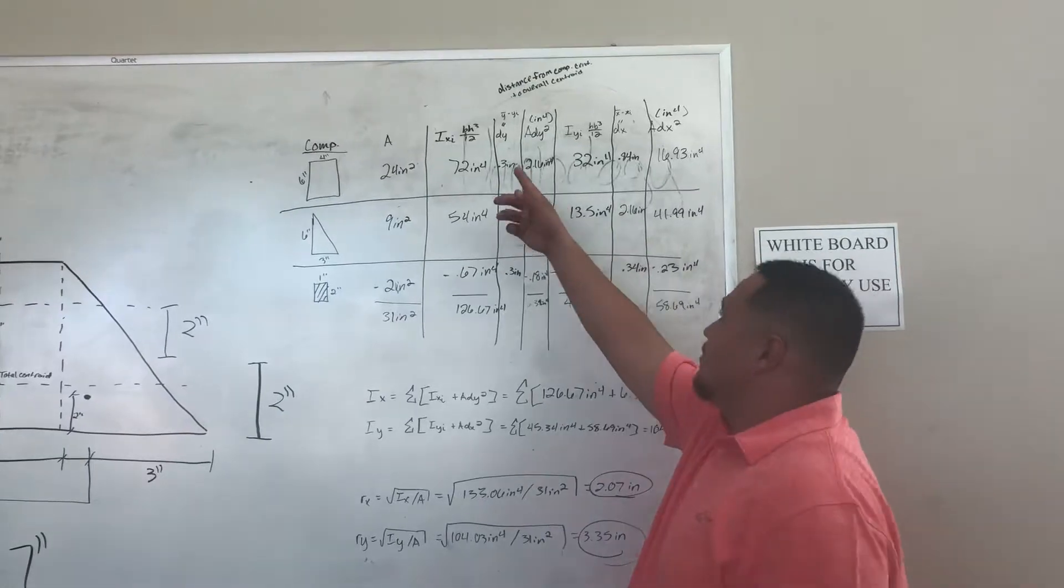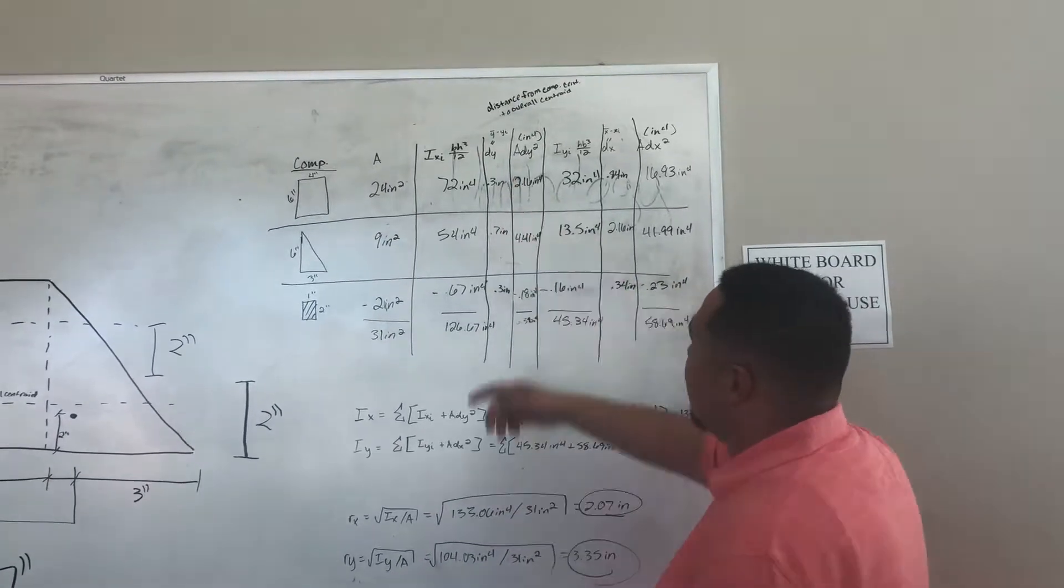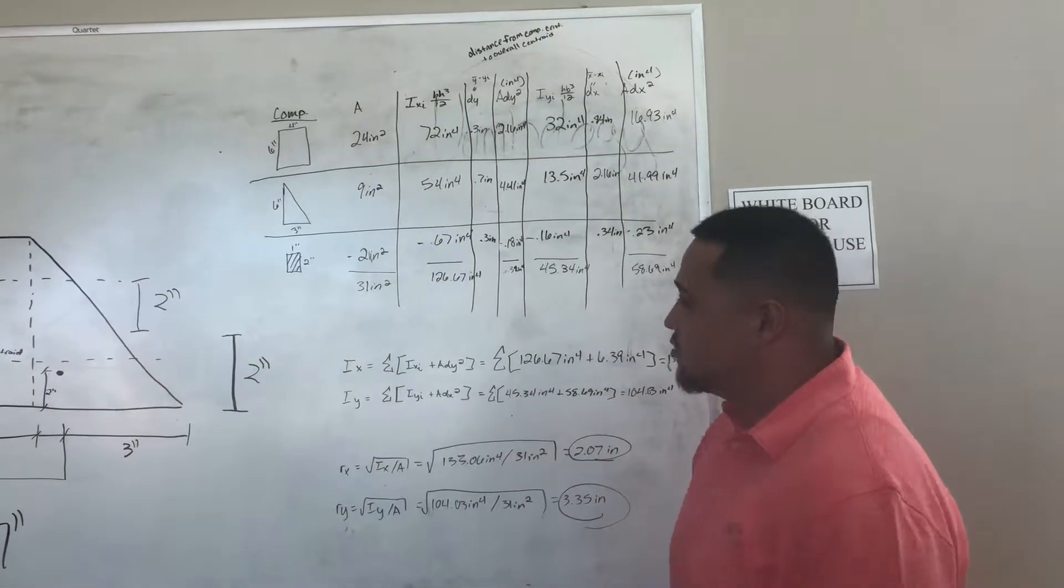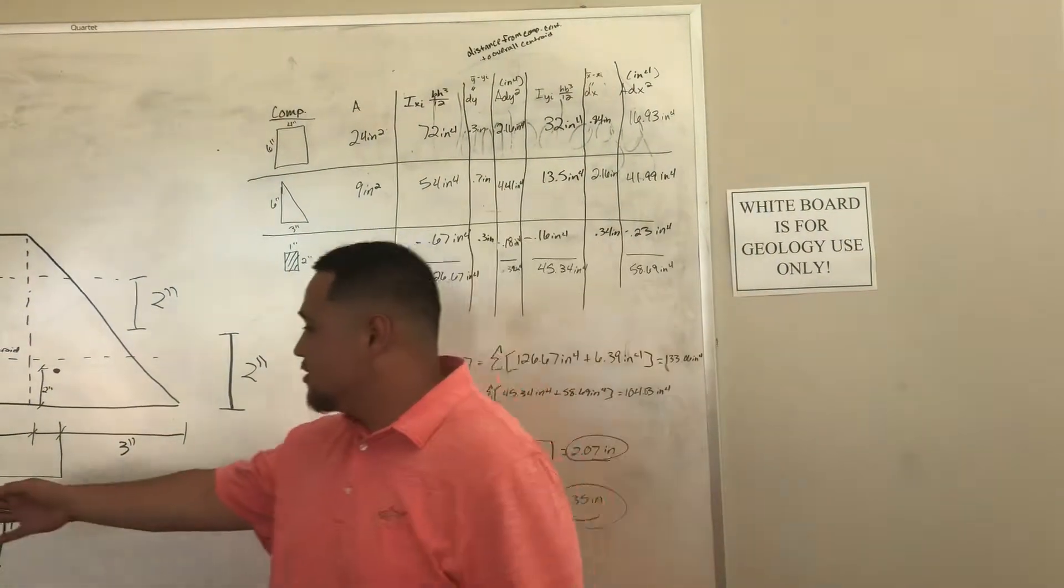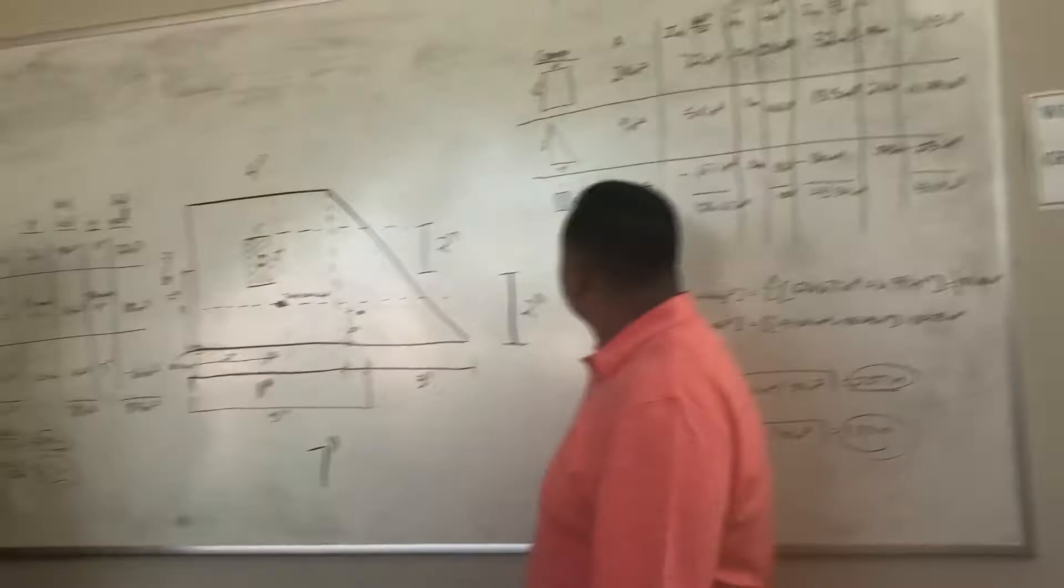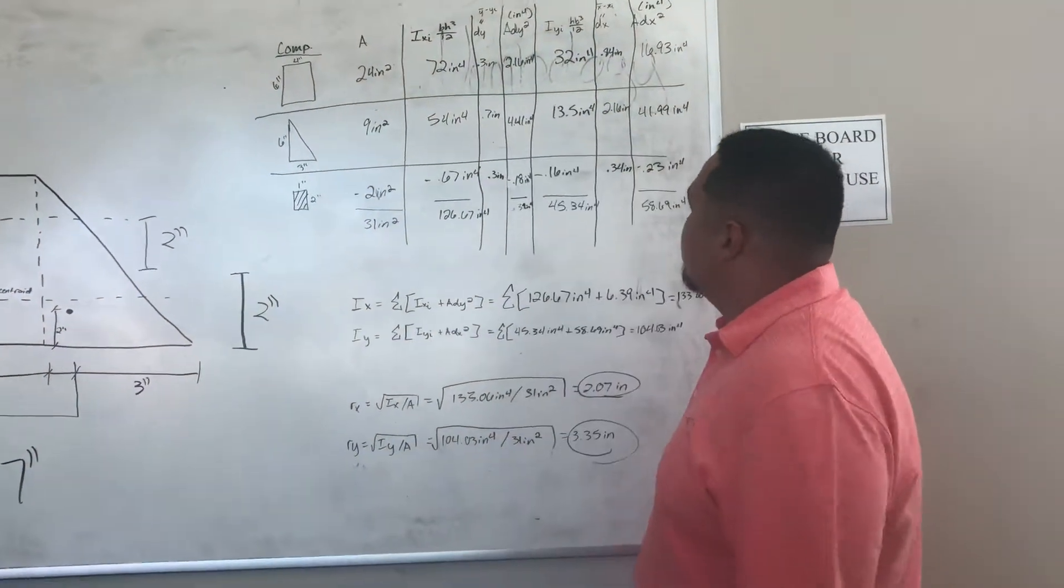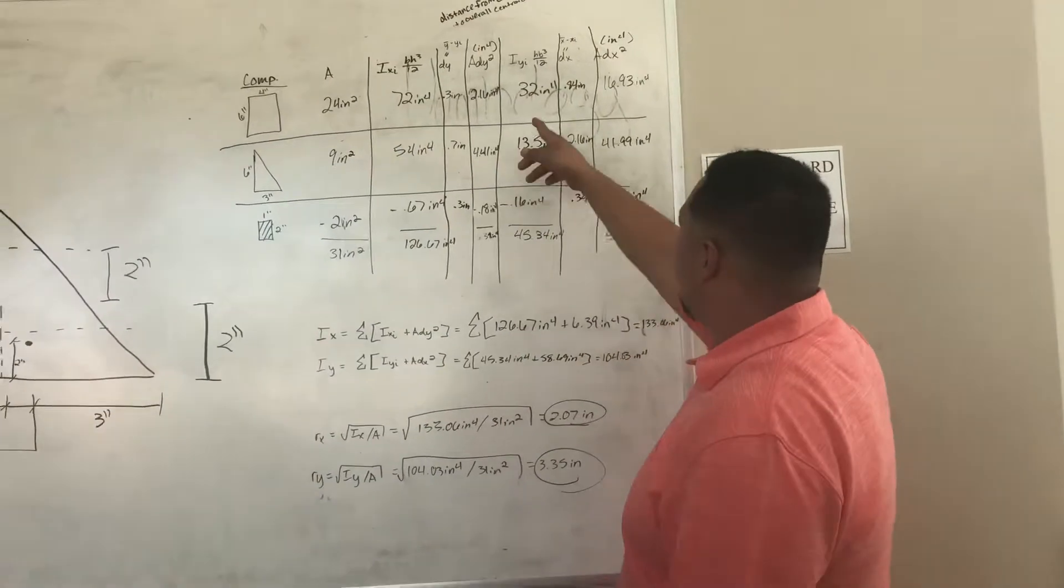Then you find DY. How you find that is you take your Y bar minus your Y. As we explained up there, that's the distance from the component centroid to the overall centroid. We worked it out - if you go over here to the bottom corner where we've explained. From there, you can find your A DY squared. We can do the same thing for the component in the Y direction.